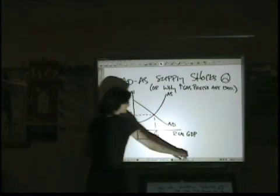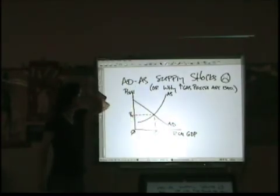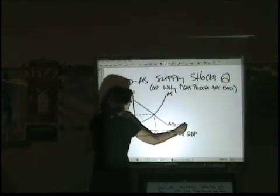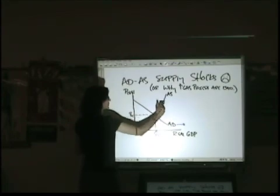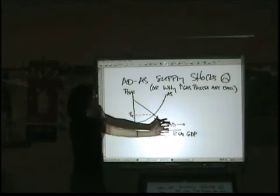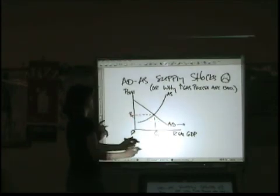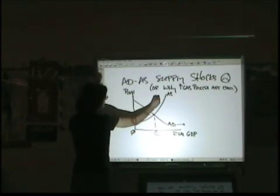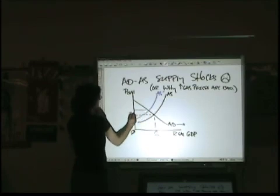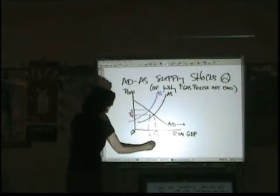Now, how to represent that graphically? We said with demand pull inflation that aggregate demand would slide out and cause prices to be pulled up. With a negative supply shock, this is cost push inflation because we are pushing aggregate supply back. Pull this out, you push him back. Two completely different things that can have the same basic effect. So if aggregate supply slides to the left, we see higher prices, we see lower output.